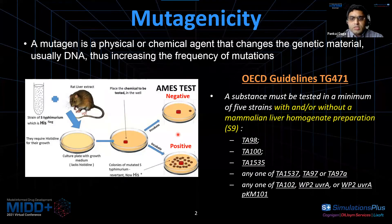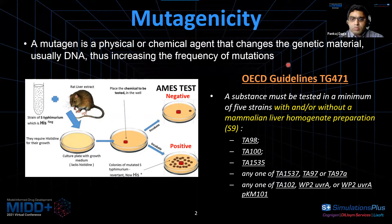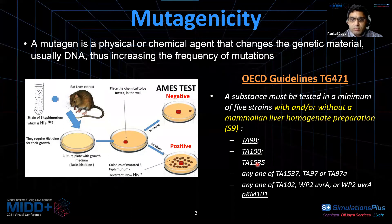The OECD — Organization of Economic Cooperation and Development — has devised guidelines called TG471, Test Guidelines 471. According to these guidelines, the substance must be tested in five different strains with or without mammalian liver homogenate, mostly rat liver homogenate. These strains include TA98, TA100, TA1535, and any one of TA97 or TA1537, and any one of TA1 or TA2 or WP2.